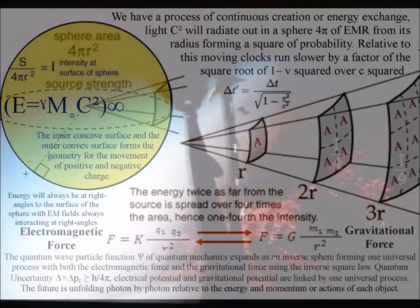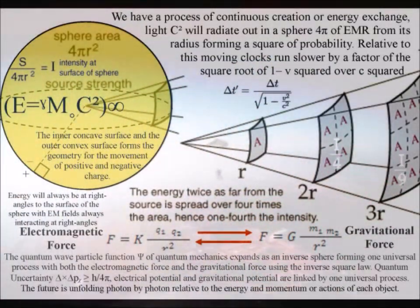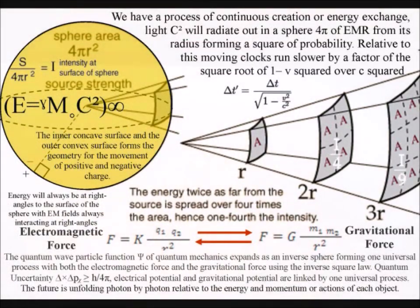We have the inverse square law because the surface area of the light sphere increases with the square of the radius. Thus the strength of the gravitational field is inversely proportional to the square of the distance from the source.